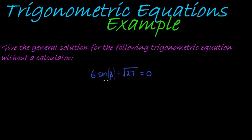And what we have here is that sine of beta, 6 sine of beta plus the square root of 27 is equal to 0. What must beta be? And they ask us the general solution.